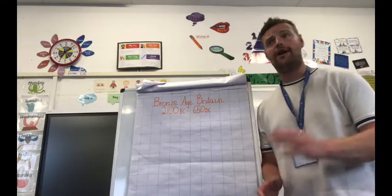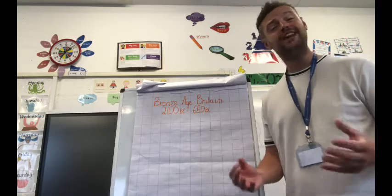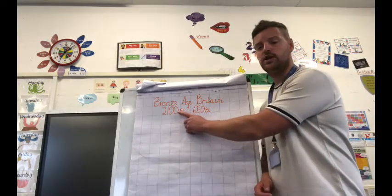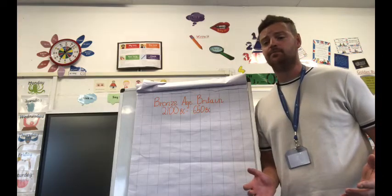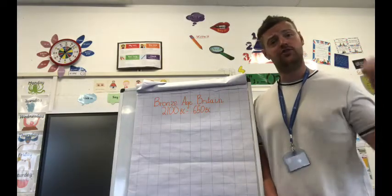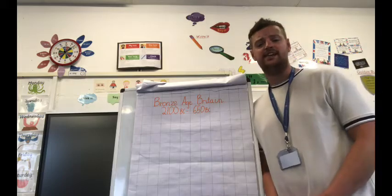Now, bronze was used around the world previous to the UK, but the Bronze Age really only started in the UK around 2100 BC. So that's over 4000 years ago. The Bronze Age people were intelligent people, as you saw from the chat we were just chatting to. They weren't simple cavemen.